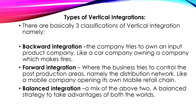For forward integration, a business tries to control post-production areas, namely the distribution network, like a mobile company opening its own mobile retail chain. For example, Samsung produces mobile phones, and if they want to distribute their own products by opening Samsung mobile retail chains, that is an example of forward integration — they are the manufacturer but at the same time they distribute their own products.